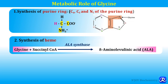Second, glycine is involved in the synthesis of heme. For synthesis of heme, glycine is required in the first reaction — glycine combines with succinyl-CoA, and by the action of enzyme ALA synthase there is formation of delta-aminolevulinic acid, that is ALA. So glycine has an important role in the synthesis of heme.